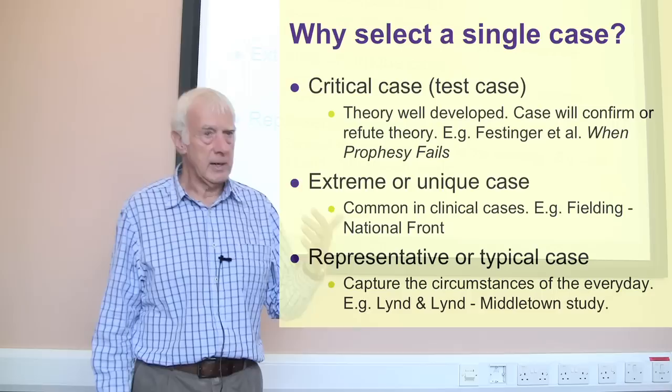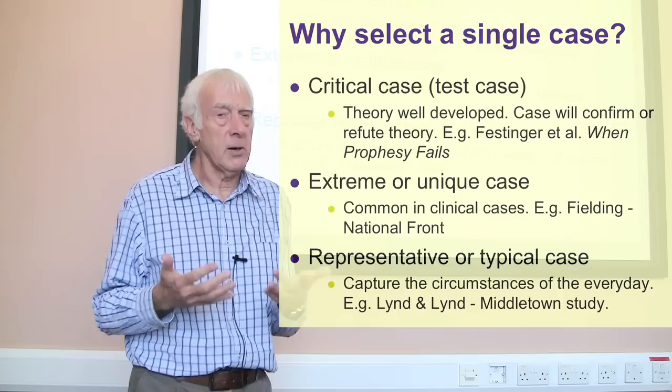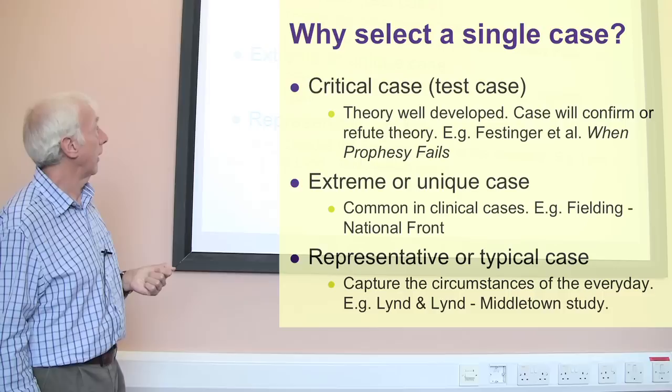Replication in this area is slightly different from the kind of random sampling you might do in a survey — different rationale behind it. But we don't always do that; sometimes we pick a single case, and there must be a justification for picking a single case. Here are the kinds of reasoning involved.